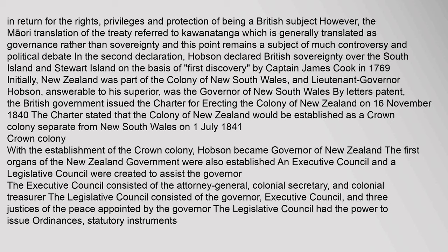Initially, New Zealand was part of the Colony of New South Wales, and Lieutenant Governor Hobson, answerable to his superior, was the Governor of New South Wales by letters patent. The British government issued the charter for erecting the Colony of New Zealand on 16 November 1840. The charter stated that the Colony of New Zealand would be established as a Crown Colony separate from New South Wales on 1 July 1841.